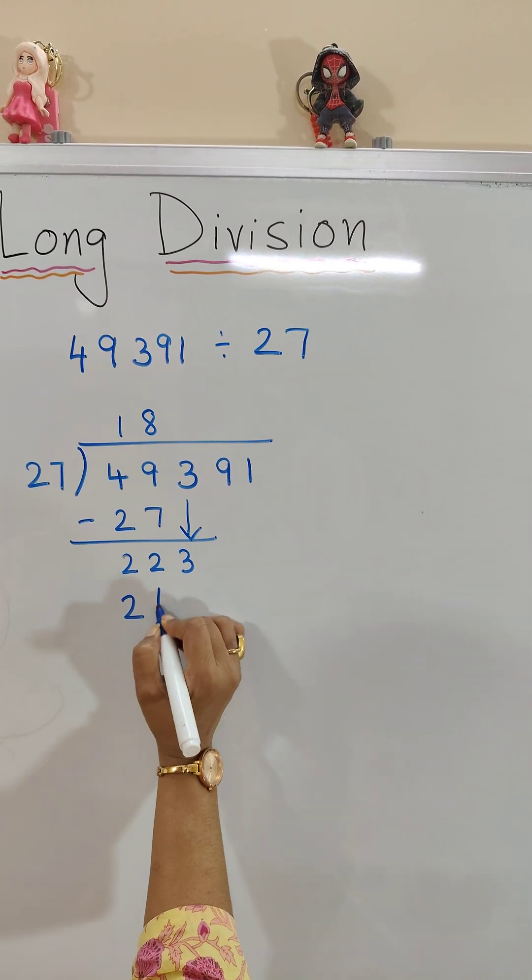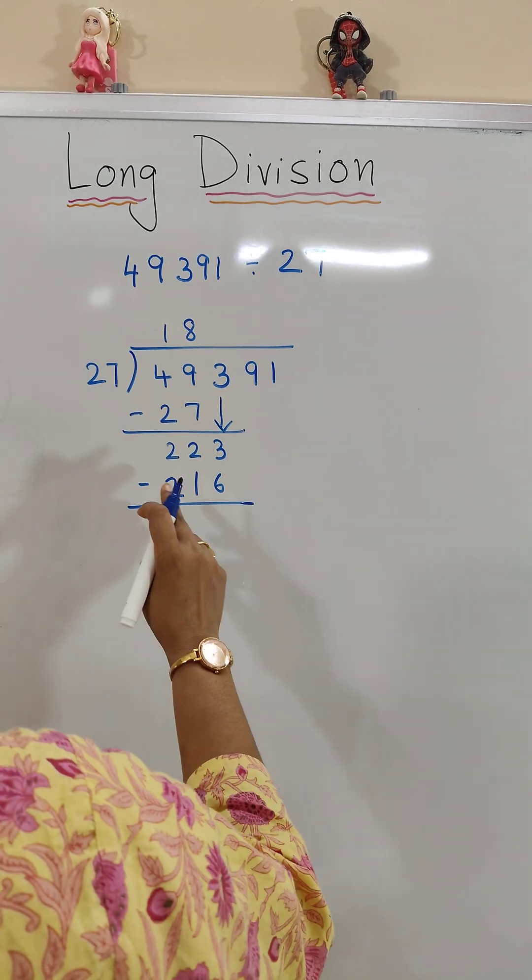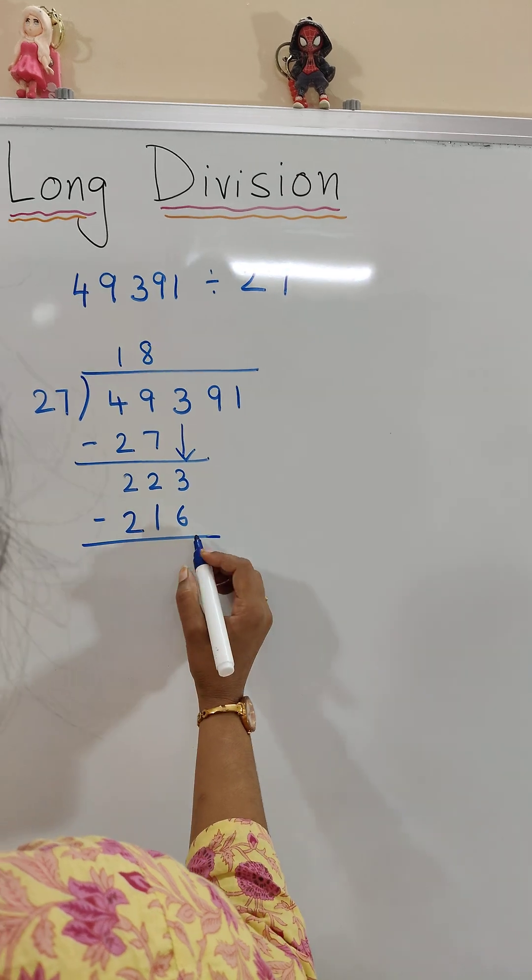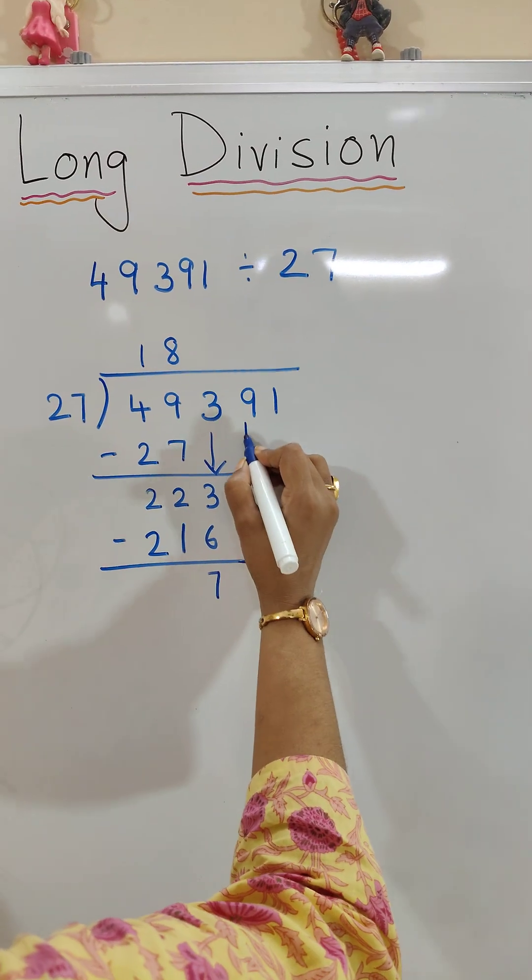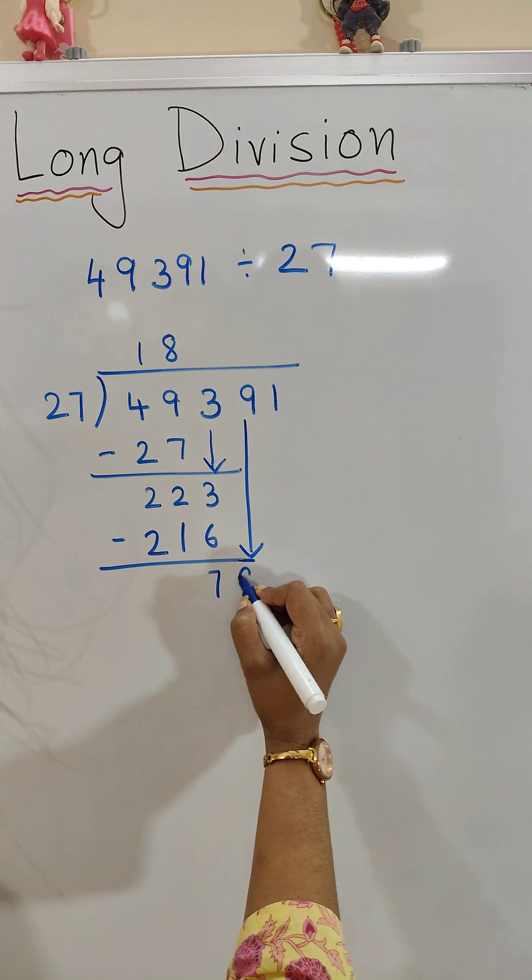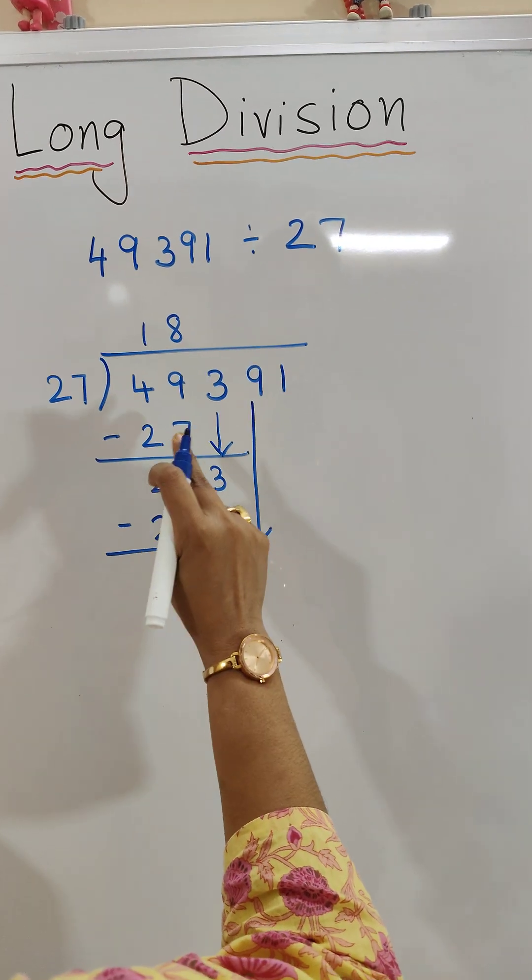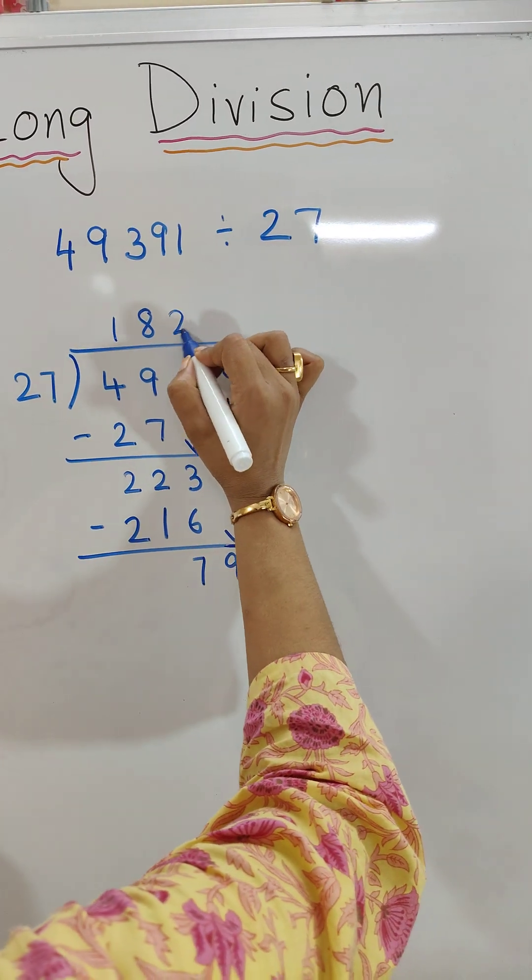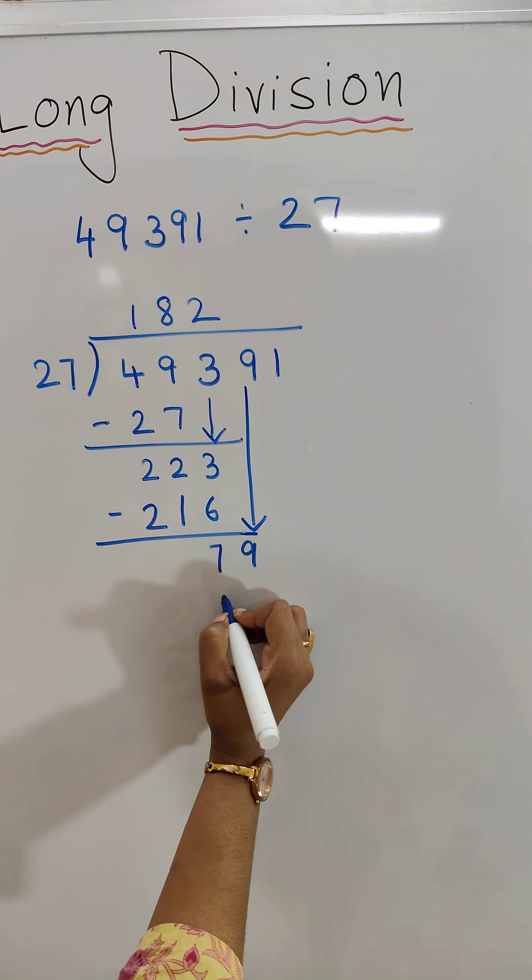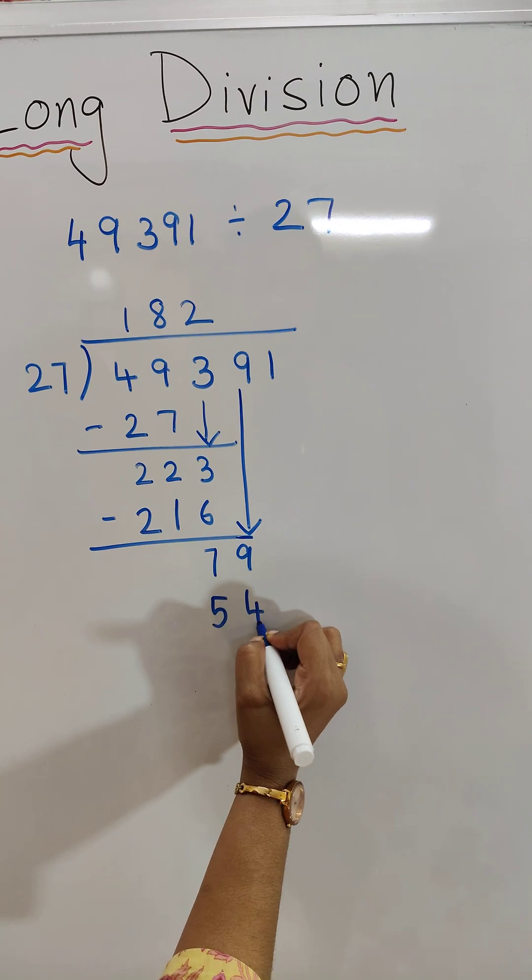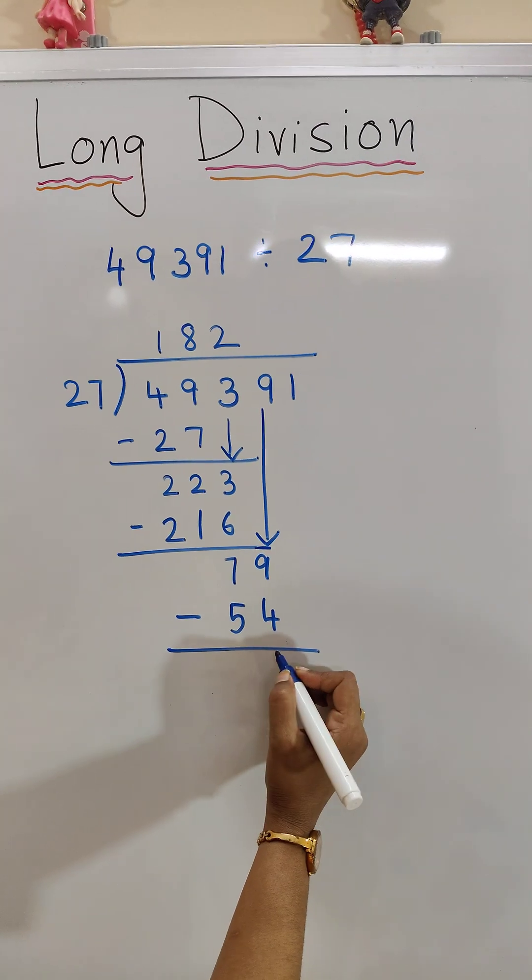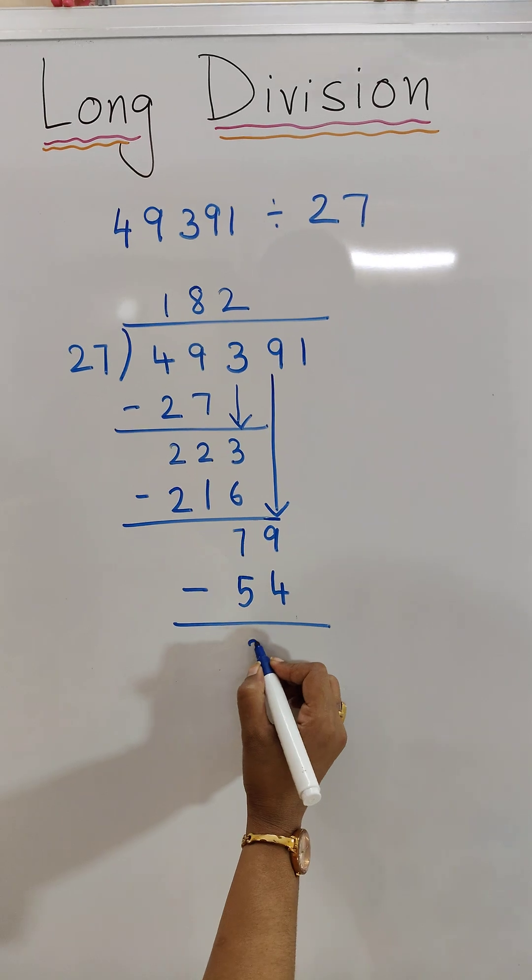223 minus 216 equals 7. Now bring down the 9, making it 79. 27 times 2 is 54. 79 minus 54 is 25.